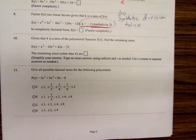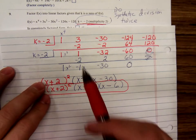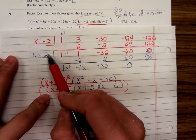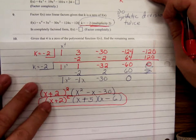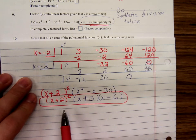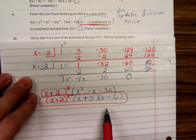Number nine: we're told negative two is a zero with multiplicity two. We did the synthetic division twice, and then after that, we got something that we could factor. So it's real easy now to look at the zeros. The zeros are negative two, negative five, and six.